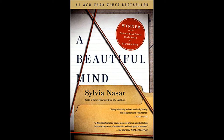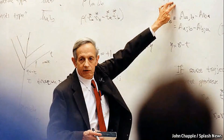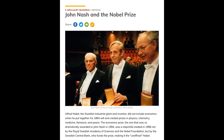John Nash made his greatest discoveries while suffering from debilitating mental disorders — paranoia and schizophrenia. He was admitted to mental hospitals and subjected to shock treatments. He confronted his own hallucinations. And he won. He overcame his mental disorders, returned to teaching and research, and won the Nobel Prize in economics.